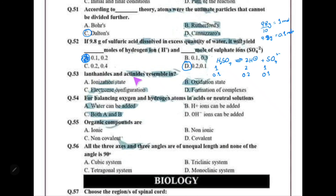Lanthanides and actinides resemble each other in their ionization state, oxidation state, and electronic configuration, because both are f-block elements. So electronic configuration is the same for both.